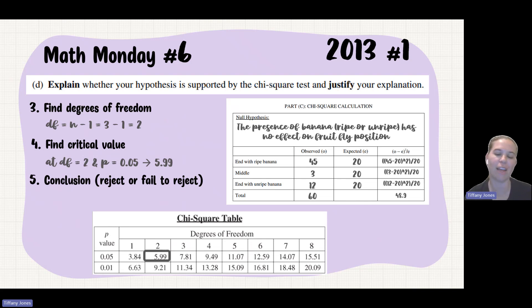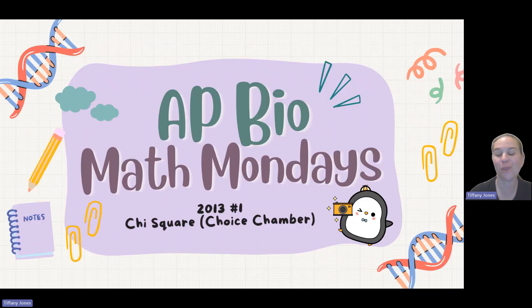So we have to say, how does the value we calculated compare to that critical value? We got 48.9. Our value is larger than the critical value, so that tells us that we're going to reject our null hypothesis. So I hope this helped. Remember, 85.5 is just a test file.